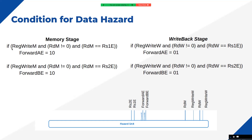No explicit condition is written for the 2'b00 forwarding signal — it is the default. If both conditions fail, 2'b00 is generated by default, meaning normal operation continues. The logic uses if-else: first check the memory stage condition; if true generate 2'b10; if not, check the writeback stage condition; if true generate 2'b01; otherwise default to 2'b00. Here a diagram of the hazard unit is shown with its inputs and outputs.